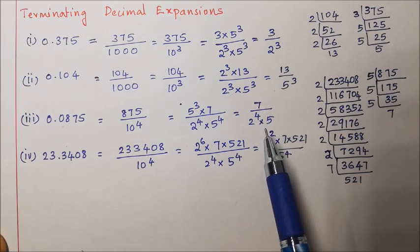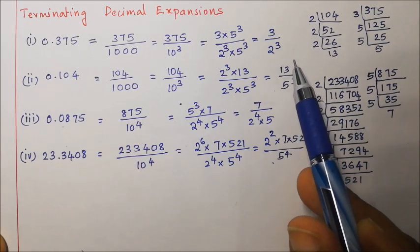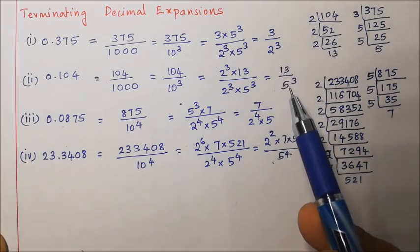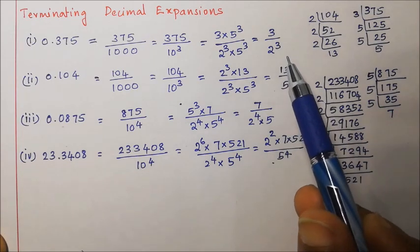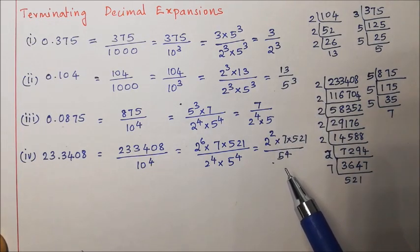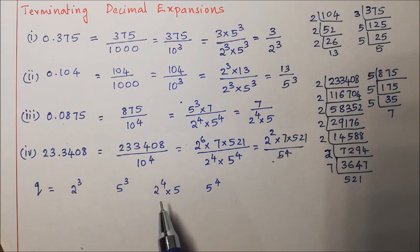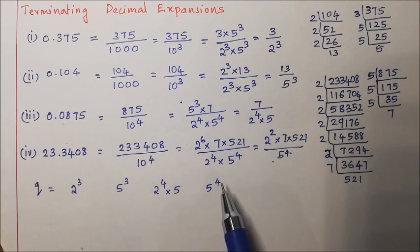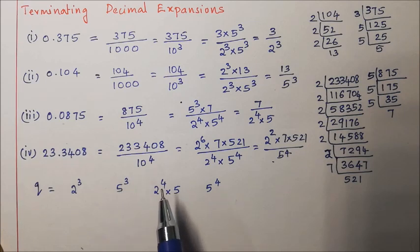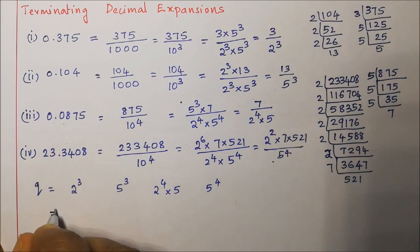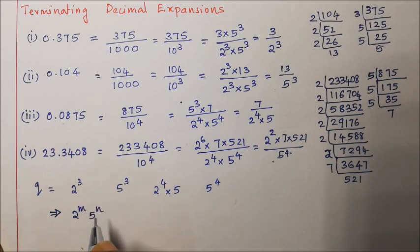These fractions are co-prime — p and q do not have any common factors other than 1. Looking at the denominators: 2 to the power 3, 5 to the power 3, 2 to the power 4 into 5, 5 to the power 4 — what is common? They are either in the power of 2, or the power of 5, or both. So the denominator q will be in the form of 2 to the power m into 5 to the power n, where m and n are non-negative integers.